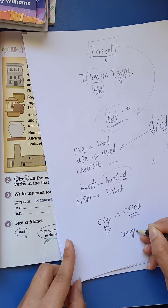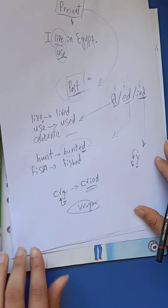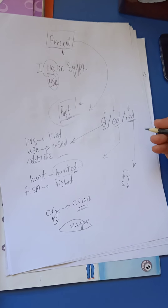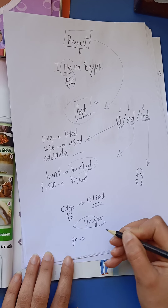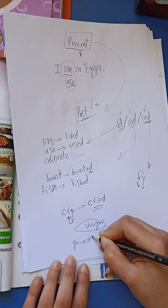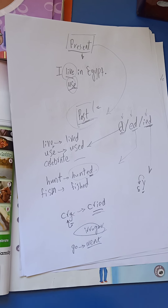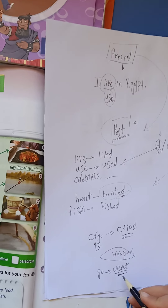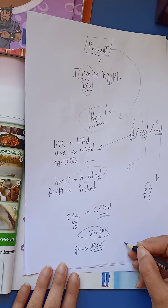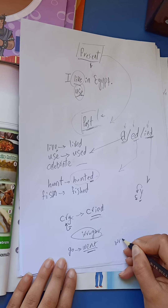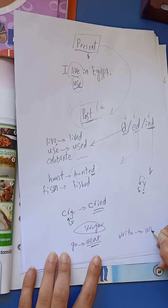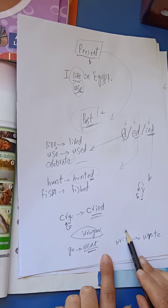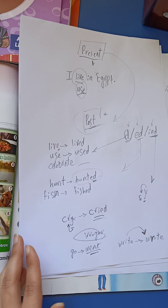There are also irregular verbs. What does it mean? Irregular verbs are verbs we can't add D, ED, or IED to in order to make the past — we need to memorize them. For example, 'go' turns into 'went' in the past — not 'goed.' We can't add ED here. Similarly, the verb 'write' becomes 'wrote.' We just need to know the past form.